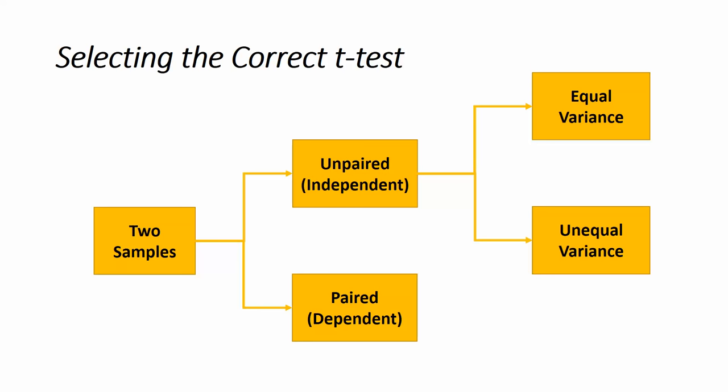Let's build a path from the start of our two samples to the different types of t-tests that we want to use. We're comparing two samples, so the t-test is appropriate. We first have to determine whether the samples are unpaired — meaning they're independent of each other — or whether they are paired, meaning they are dependent on each other. A further complication is that when we have unpaired samples, we have to determine whether the variances are equal or unequal between the two samples.